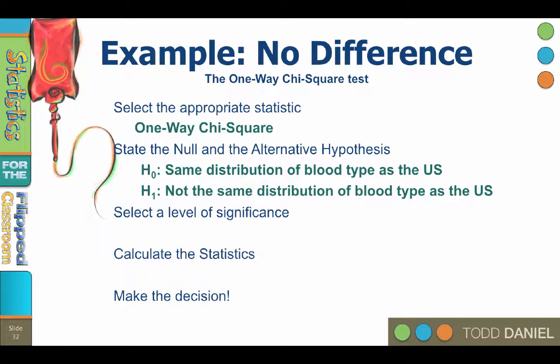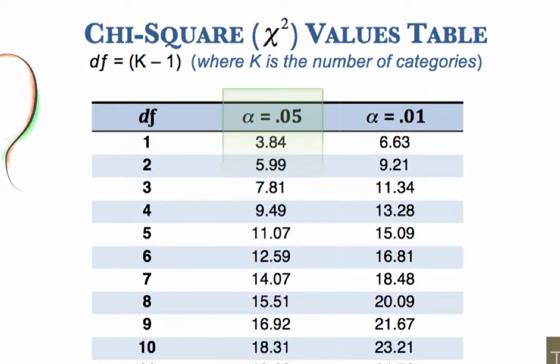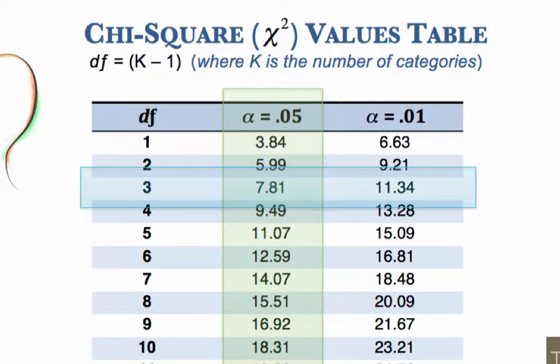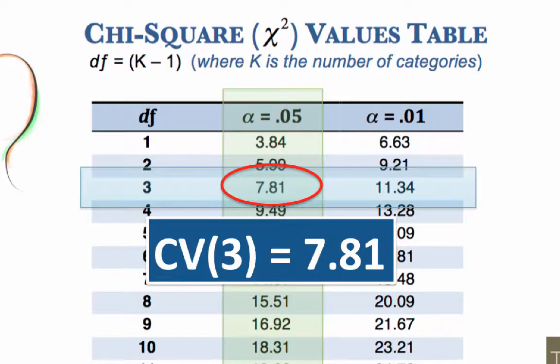Step three, select the level of significance. As with all of our previous research, we will assume alpha equals 0.05. Note that all chi-square tests are one-tailed. The degrees of freedom equals k minus one, where k is the number of categories in your sample. We have four blood types, so the degrees of freedom is three. To find the critical value, we will go to the chi-square table, available at the end of your notes. For an alpha level of 0.05 with three degrees of freedom, the critical value is 7.81. Chi-square values greater than 7.81 indicate that the observed values are not a good fit to the expected values.